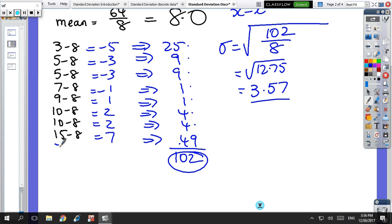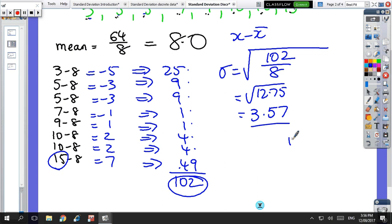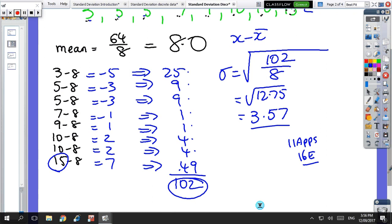It's pretty large because, in actual fact, we had one score that was a bit different to the others. So copy that down, and in the book in 11 apps, there's an exercise in 16E that you'll see some questions that look like that, where you just get a string of data and there's not much there. So copy that and come across when you're ready.